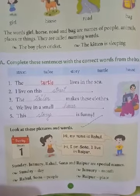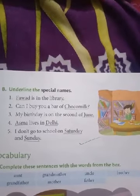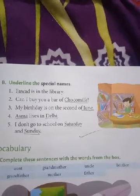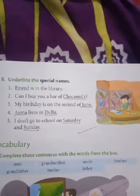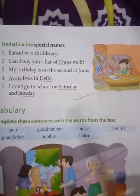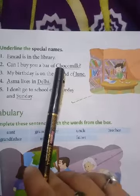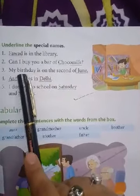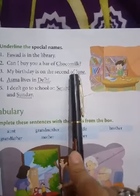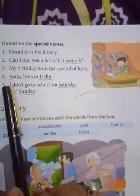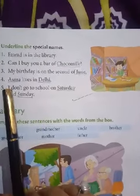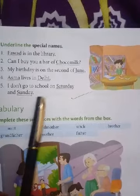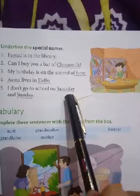Now come to page number 5, question number B: underline the special names. As I told you on the previous page, special names are particular names. The first one is done for you. Second one: can I buy you a bar of Choco Milk? — Choco Milk is a special name, so you will underline Choco Milk. Third one: my birthday is on the second of June — you will underline June. Fourth one: Asma lives in Delhi — you will underline Asma and Delhi. Fifth one: I don't go to school on Saturday and Sunday — Saturday and Sunday are special names, so you will underline Saturday and Sunday.